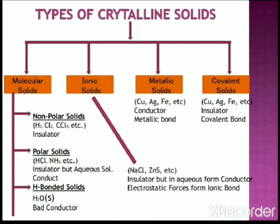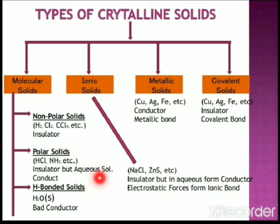Solids are mainly classified into two types: crystalline and amorphous solids. Crystalline solids are further classified into four types based on the nature of the intermolecular forces operating in them: molecular solids, ionic solids, metallic solids, and covalent solids. Molecular solids are again classified into three subtypes: nonpolar molecular solids, polar molecular solids, and hydrogen bonded molecular solids.